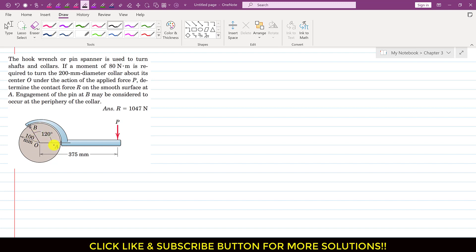So we have to determine the force which this wrench applies on this collar at point A. And it is said that engagement of the pin at B may be considered to occur at the periphery of the collar.